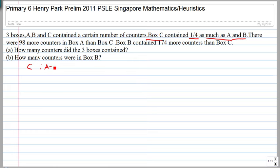So if you were to represent this as a ratio, box C to A plus B is 1 is to 4. So you know C is one unit, that's clear cut, right? There were 98 more counters in box A than box C.